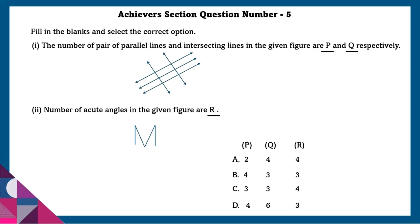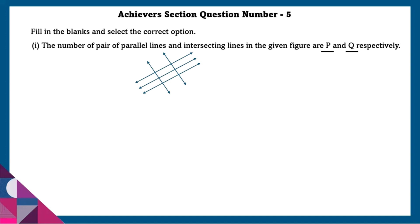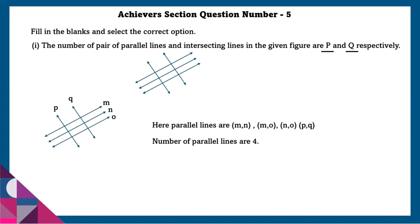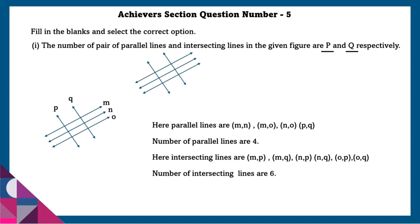Achieve section question number 5: Fill in the blanks and select the correct option. The number of pairs of parallel lines and intersecting lines in the given figure are P and Q respectively. The parallel lines are M and N, M and O, N and O, P and Q — so the number of parallel lines is 4. The intersecting lines are MP, MQ, NP, NQ, OP, OQ — so the number of intersecting lines is 6.